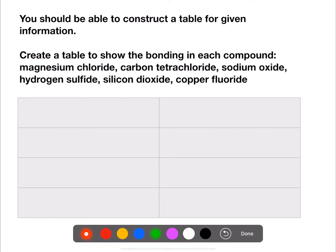You should also be able to construct tables for given information. Here we are to construct a table to show the bonding in each type of compound. So we have six compounds: magnesium chloride, carbon tetrachloride, sodium oxide, hydrogen sulfide, silicon dioxide, and copper fluoride.